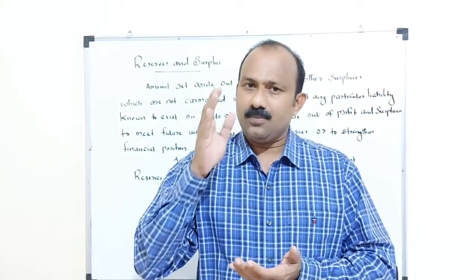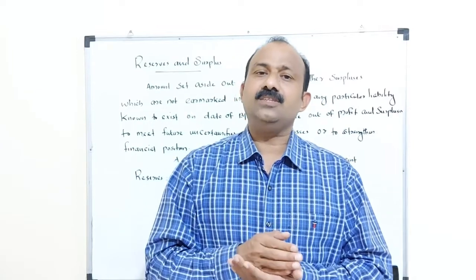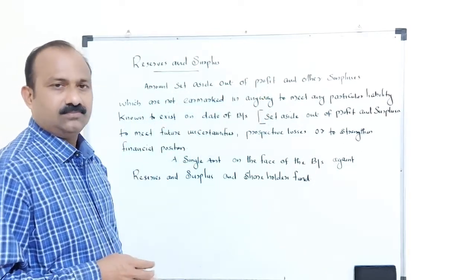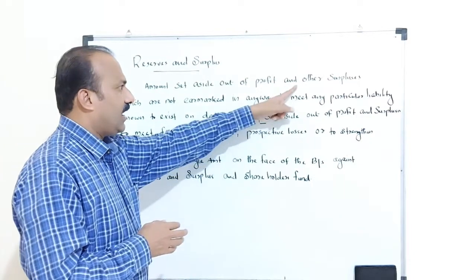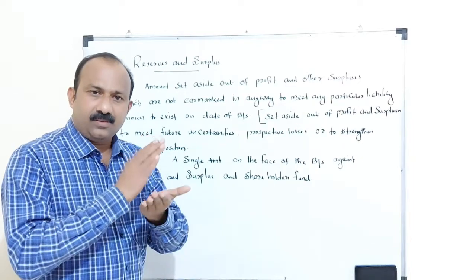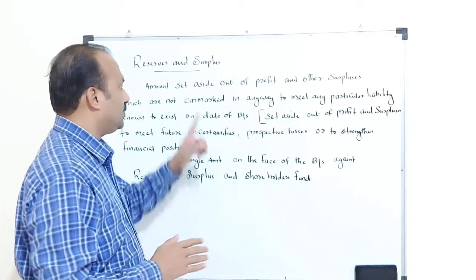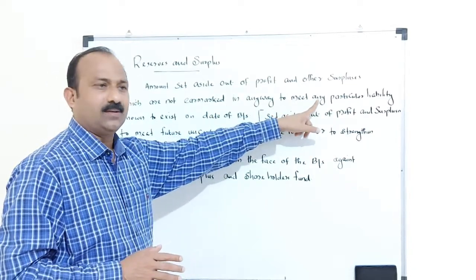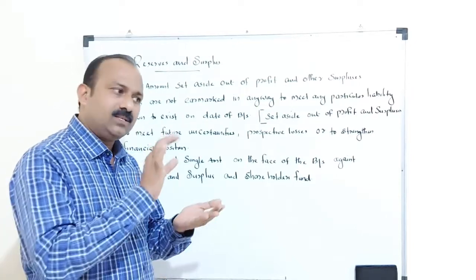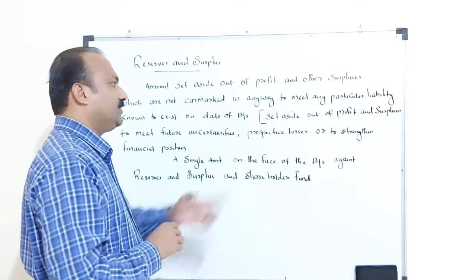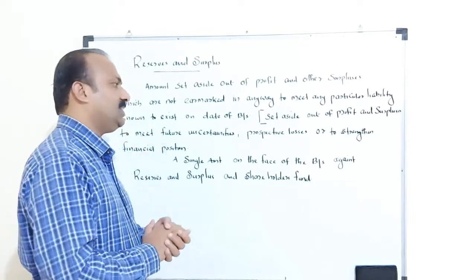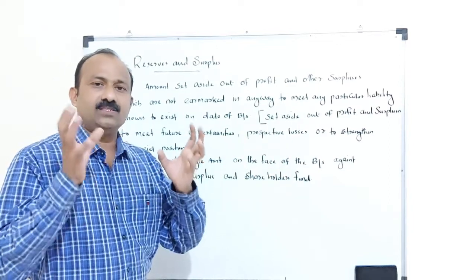Reserves and surplus are kept in order to meet the future contingencies of the company. The amount is set aside out of the profits and other surpluses which are not earmarked in any way to any particular liability — which cannot be marked for meeting any particular liability known to exist on the date of the balance sheet. In summary, it is the amount set aside from the profit and surpluses in order to meet uncertainties or prospective losses, in order to strengthen the financial position of the company.